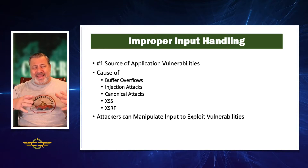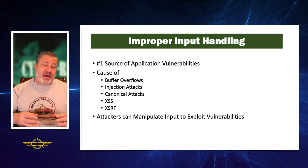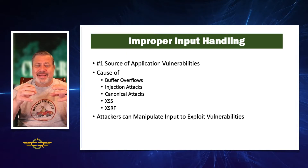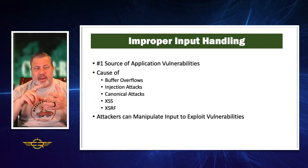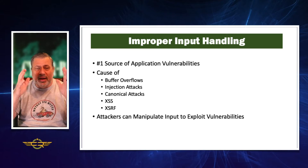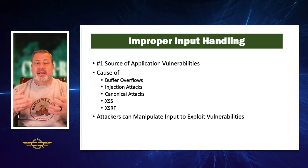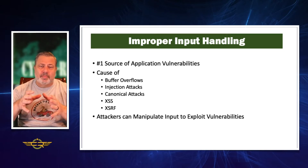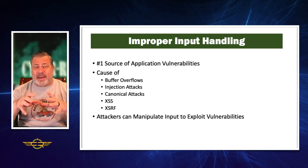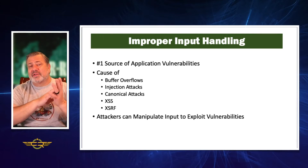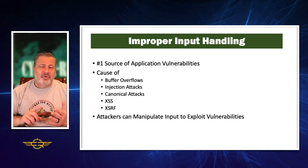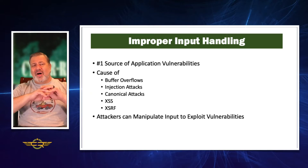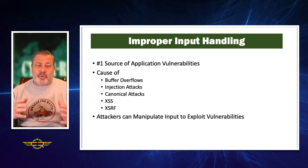As a programmer, coder, or developer of software, to make your software work, you're normally going to have to get input from the user — things like names, birthdates, addresses, quantity of something ordered. There's a field the user fills out that gets put back into the program. Improper error handling is the number one source of application vulnerabilities and causes buffer overflows, injection attacks, canonical attacks, cross-site scripting, cross-site request forgery, and more.